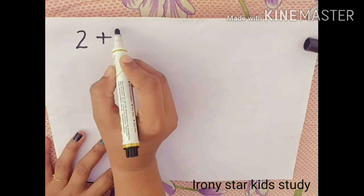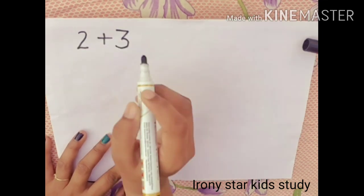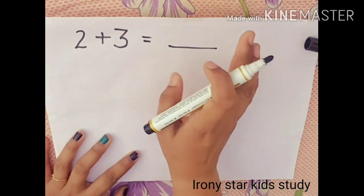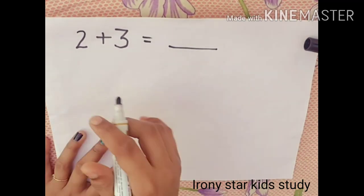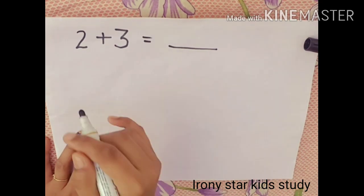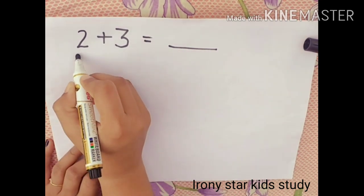2 plus 3, equal to what will become here in the underline. So I will tell you two tricks. First trick is we will draw the lines below the numbers.